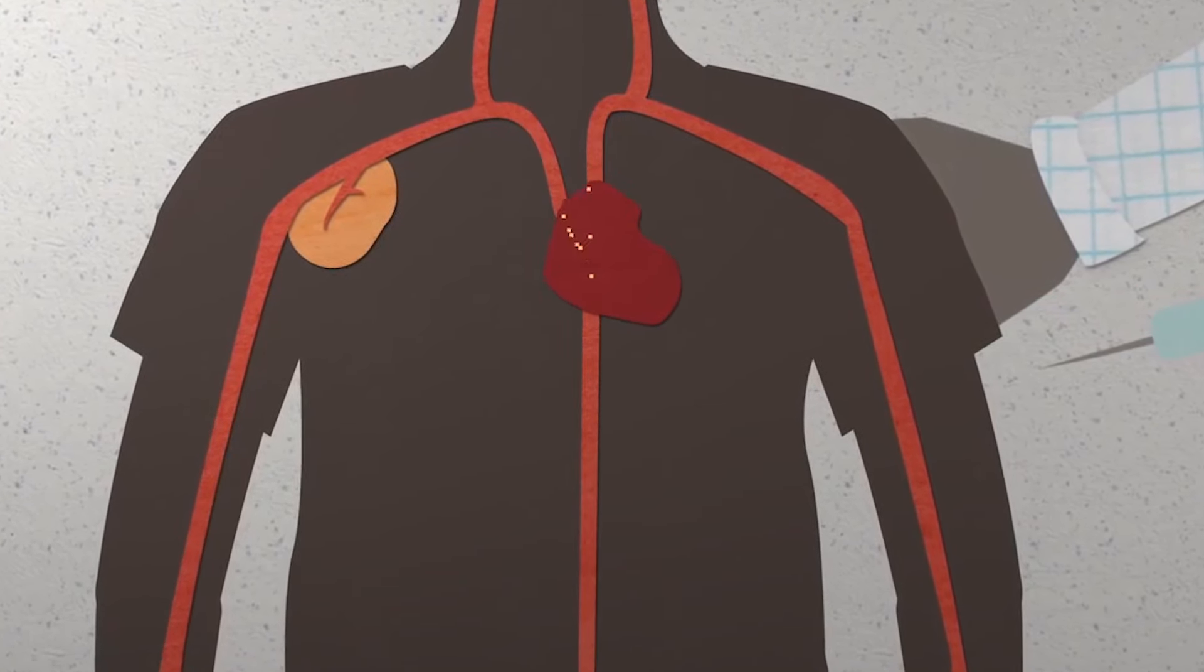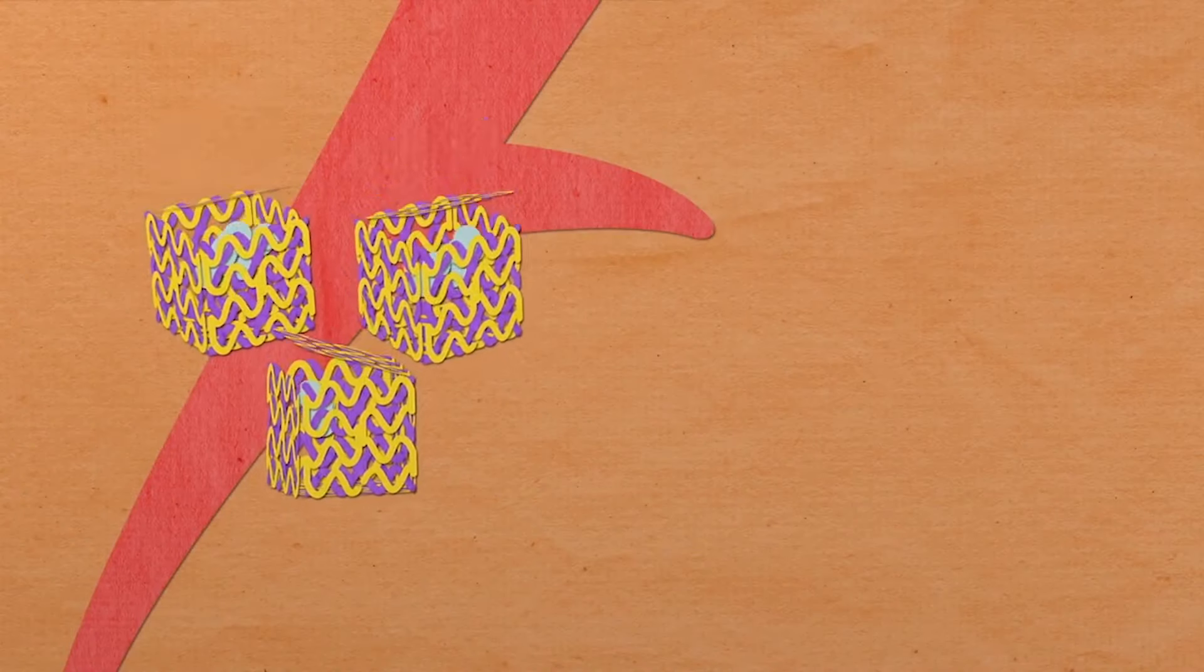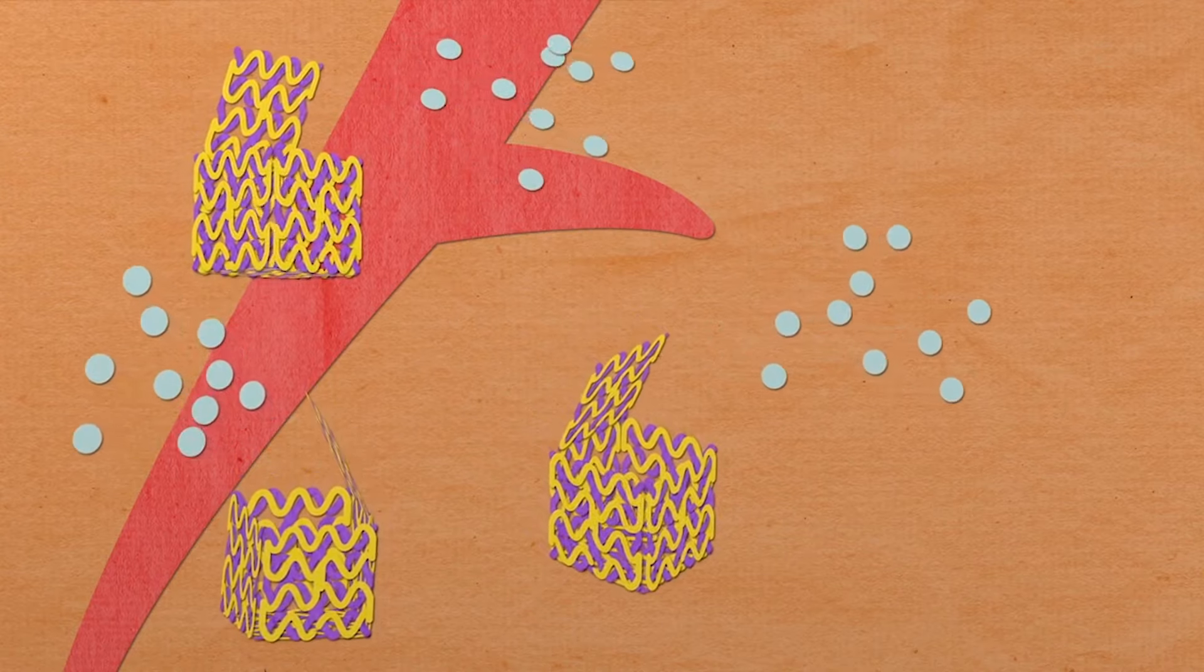The drug delivery systems that Xing works with are like cars on the highway. They keep the medicine inside until it gets to the right place and stops the medicine from going to healthy parts of your body.